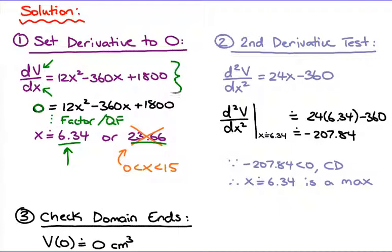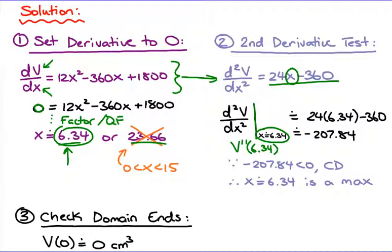Taking the second derivative and substituting X = 6.34, we get a very negative number. Since it's negative, the function is concave down at that point, which means we have a maximum. That confirms X = 6.34 gives a maximum volume.